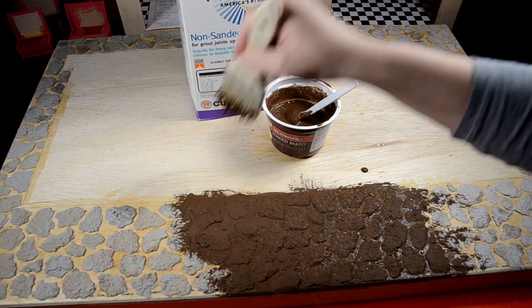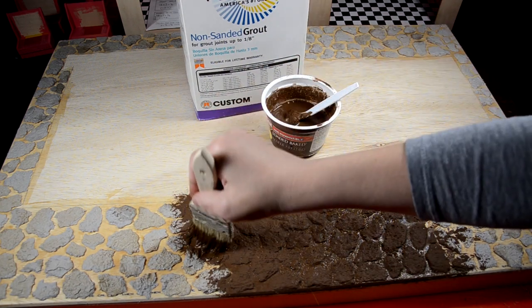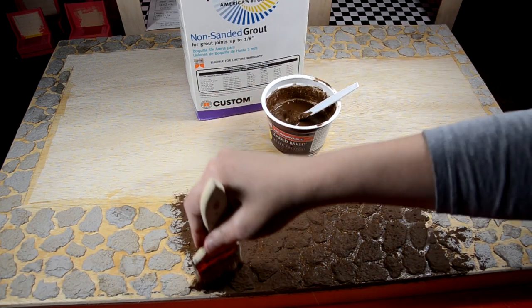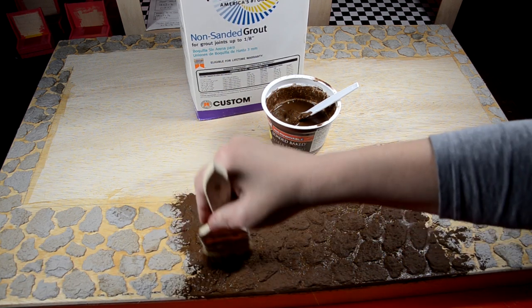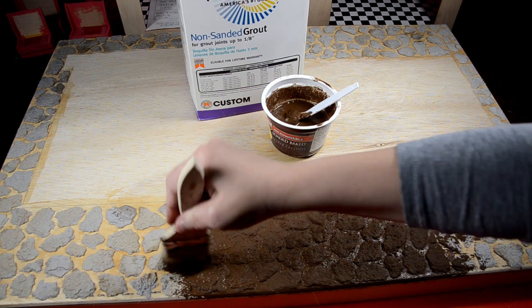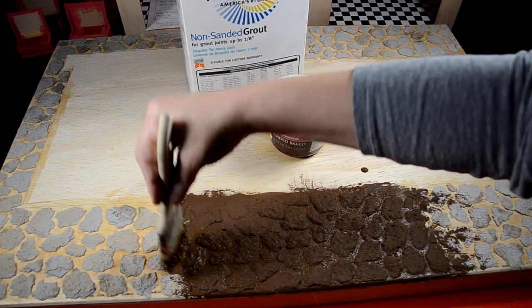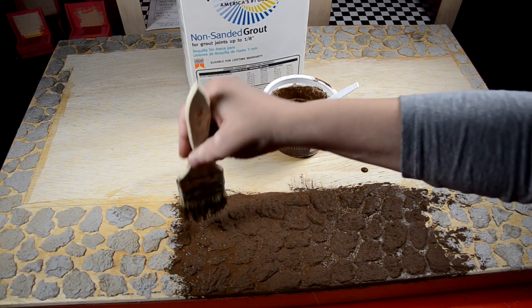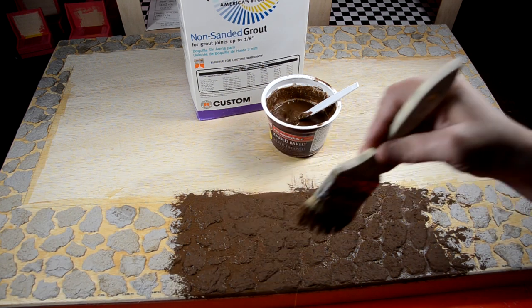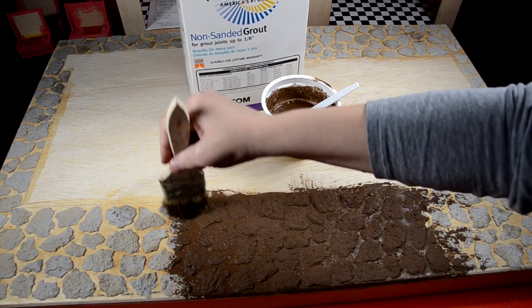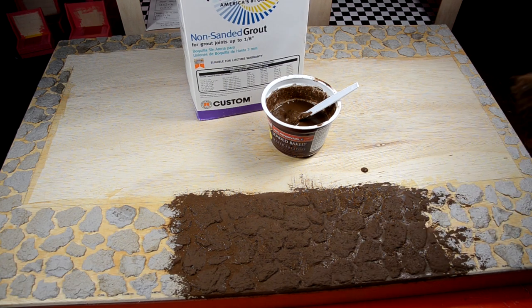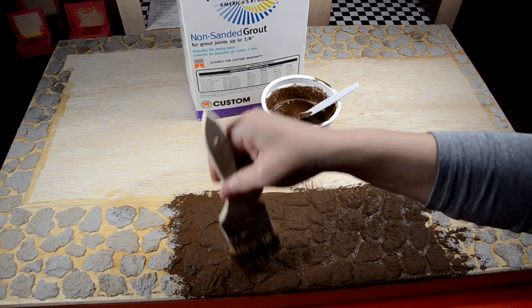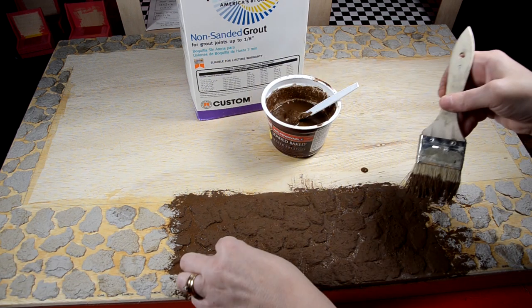Just continue that process until you've done the entire thing. Now if you have spots where your bricks are not quite the way you want them, you can always mix the grout and make it super thick and then put it on there and let it dry that way, or you can add some plaster of Paris to it and put your own mounds wherever you want them to be. I'm going to continue this process and then I will be back.